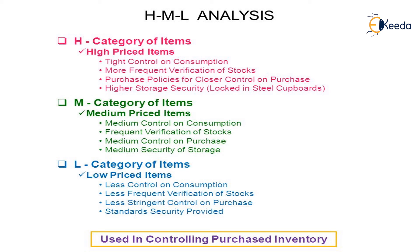These classifications are used to control purchased inventory. HML analysis helps determine what goods and how much quantity needs to be kept in inventory, guiding purchasing decisions effectively.